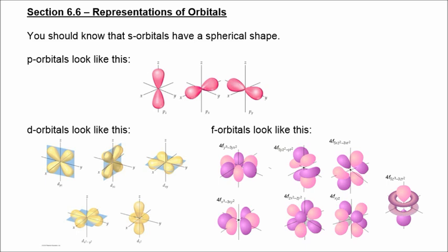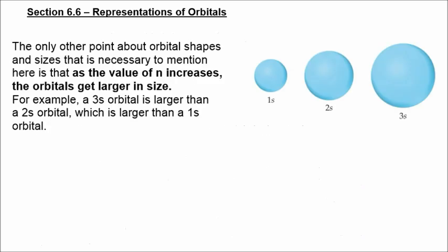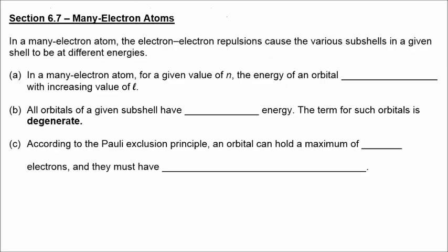Each orbital can hold 2 electrons. So 2 electrons fit in the s subshell, 6 in the p subshell, 10 in the d subshell, and 14 in the f subshell. As the value of n increases, the orbitals get larger in size — a 3s orbital is larger than a 2s orbital, which is larger than a 1s orbital.